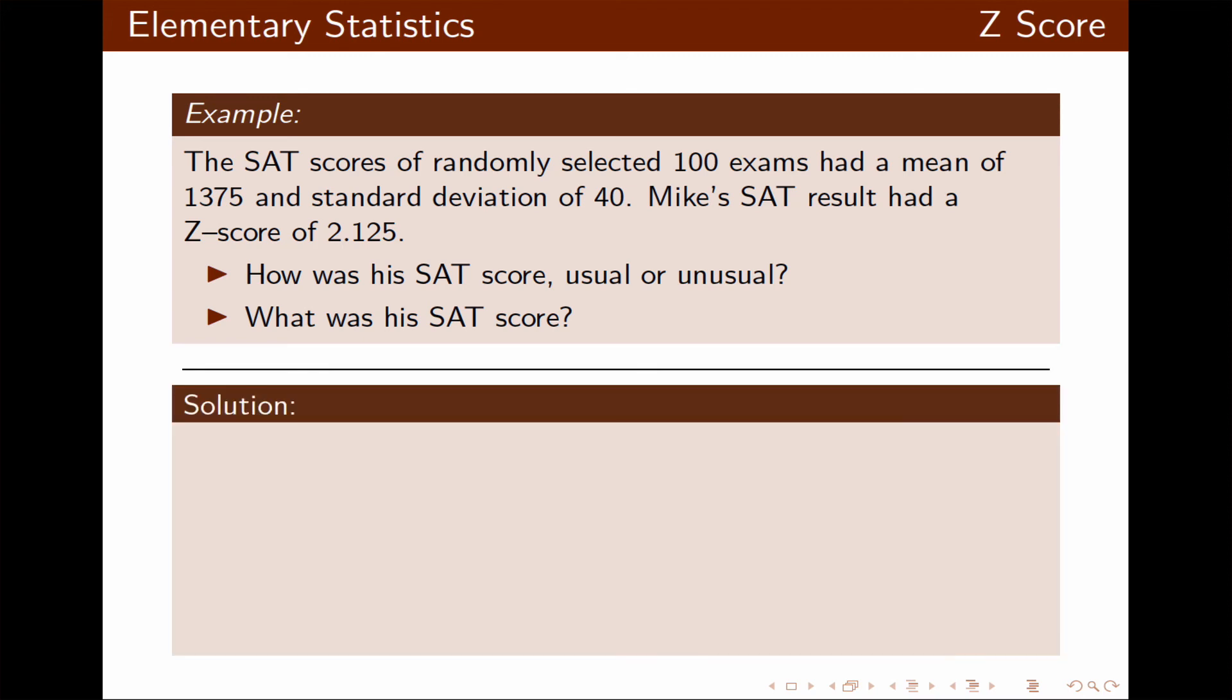Mike's z-score is already greater than 2. Therefore, his performance is considered to be unusual. Since it's more than 2, it's unusually high. But if it was less than negative 2, it would have been unusually low.